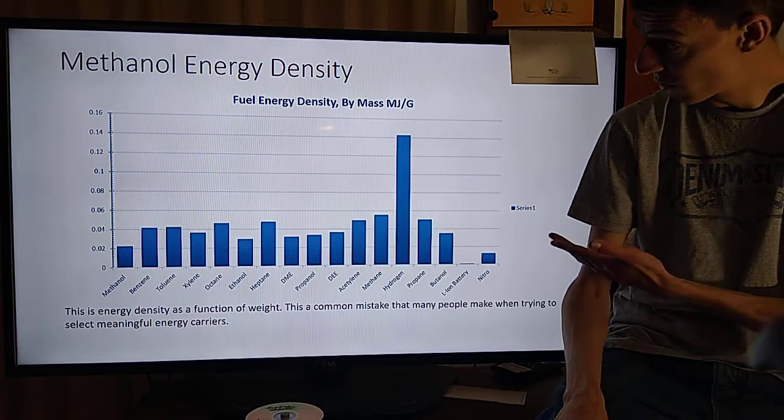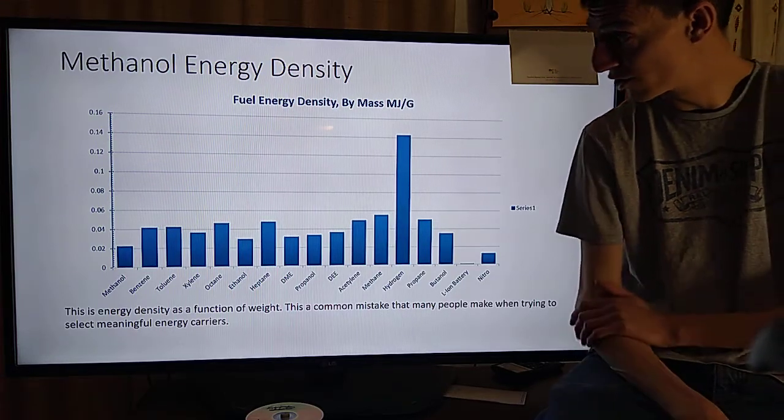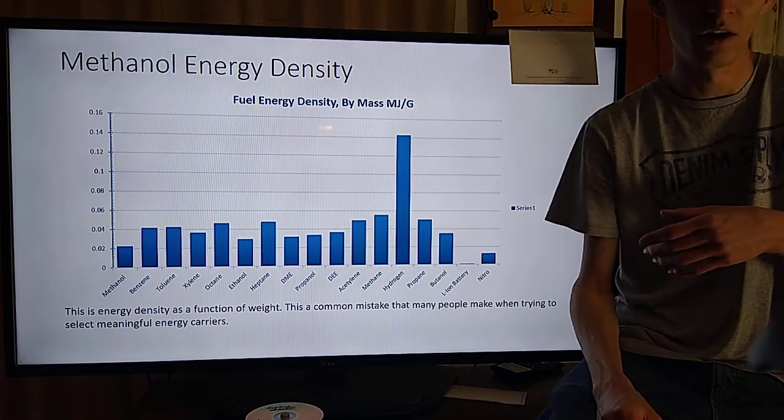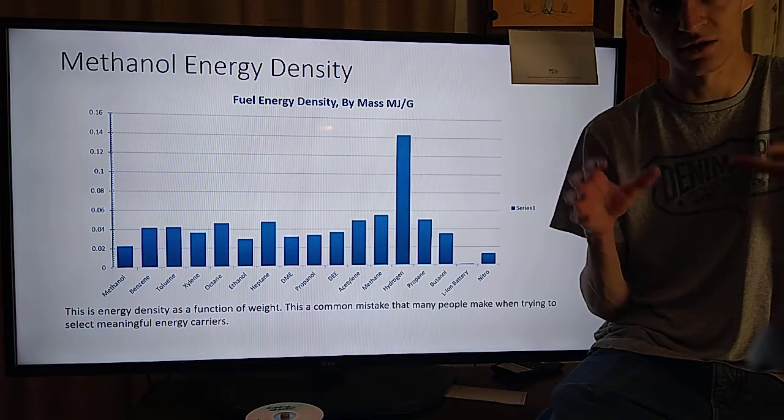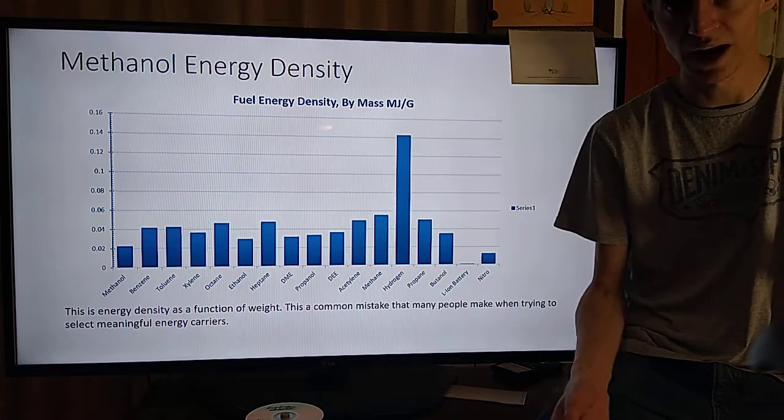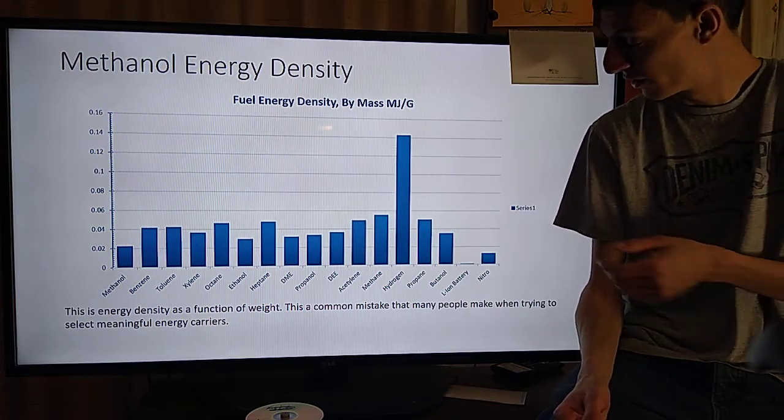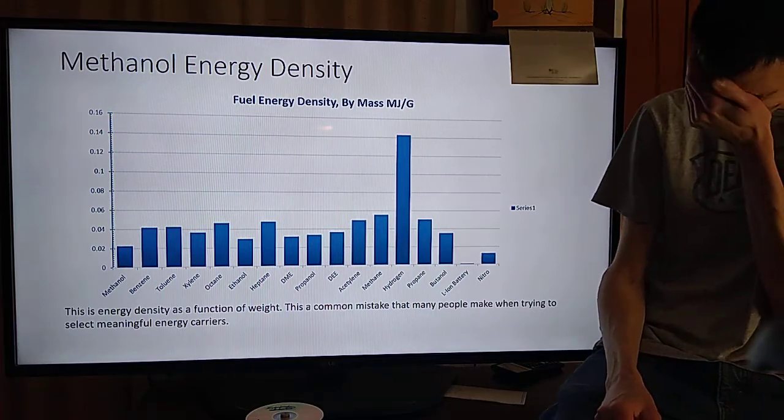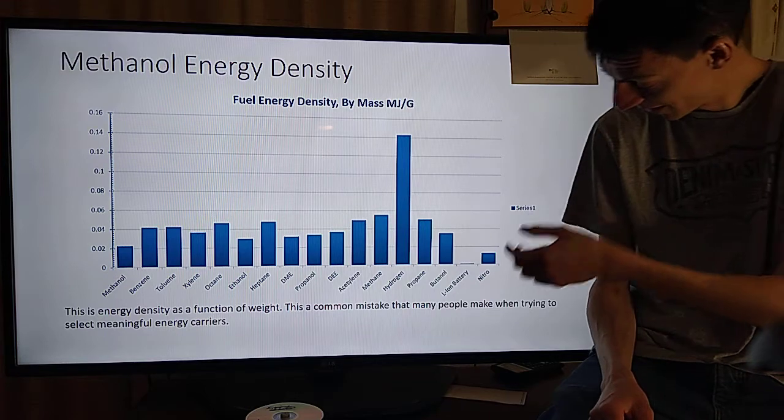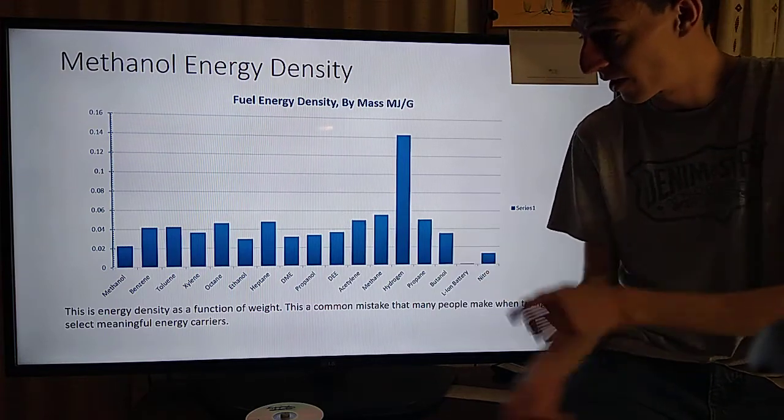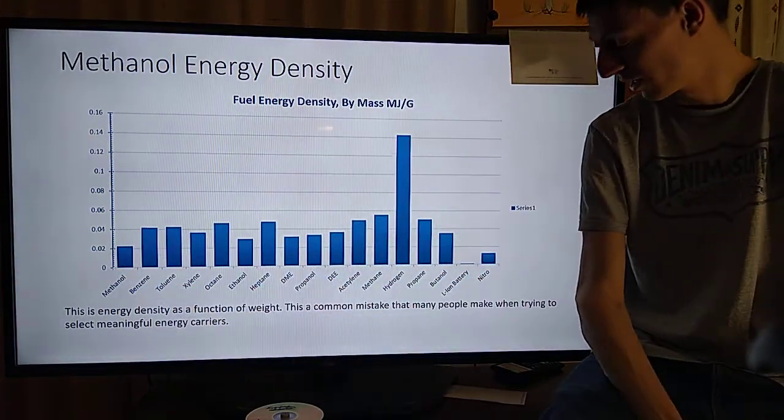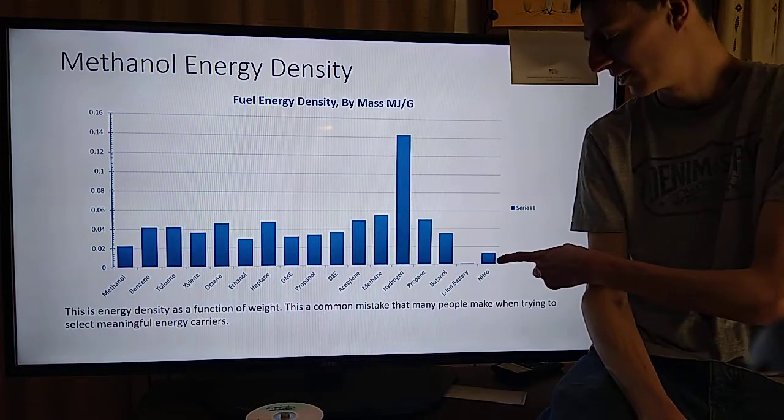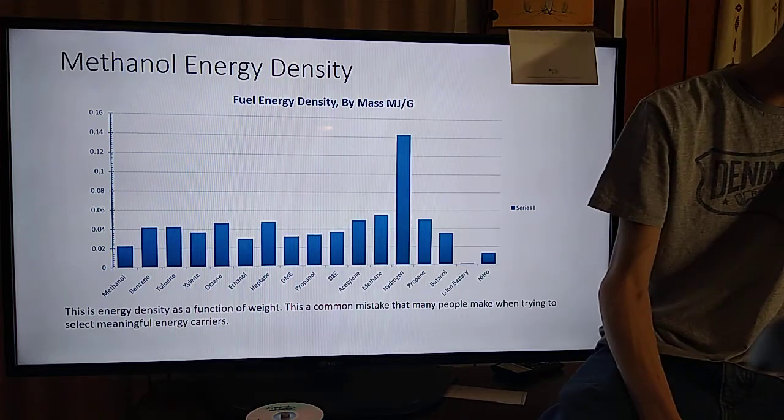Historically, we have this graph here. It's fuel energy density by mass. So you divide the amount of energy that the fuel has available by how much that fuel weighed. Hydrogen kind of comes out looking great, and then painstakingly you have the lithium ion battery and methanol being some of the lower ones on the chart, and nitromethane being worse than methanol.